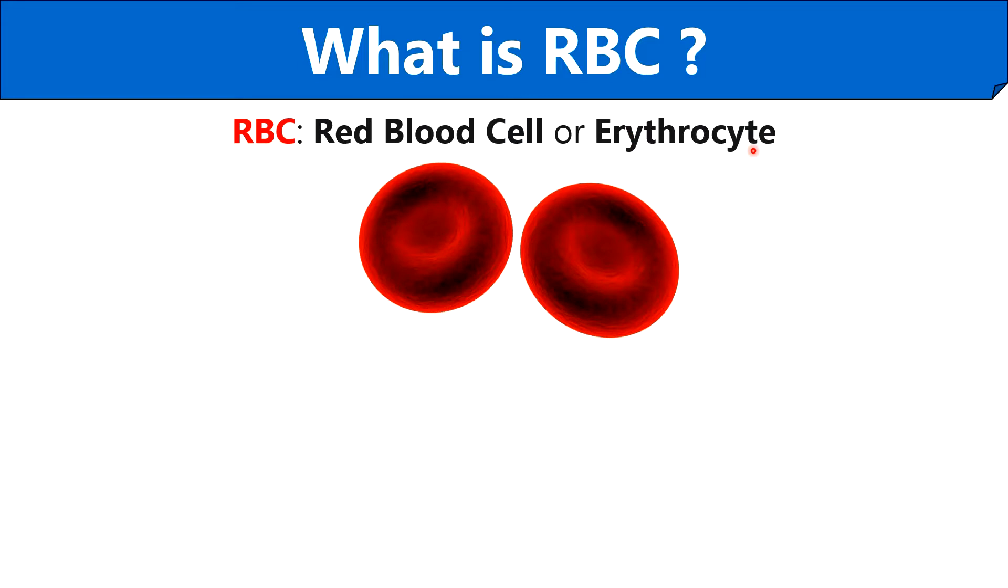RBCs are the heavy blood cells that constitute the major portion of blood and their production is regulated by the erythropoietin hormone that is released by the kidney. A very important thing to note is that a normal RBC count in humans ranges from 4.2 to 6.1 million cells per microliter.